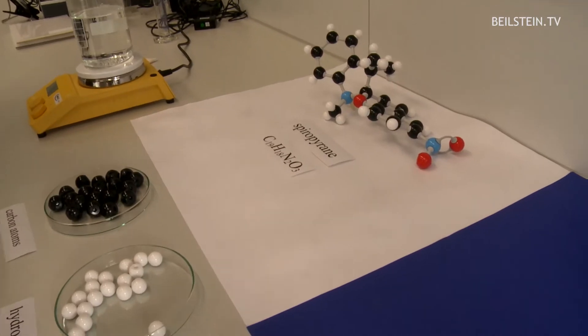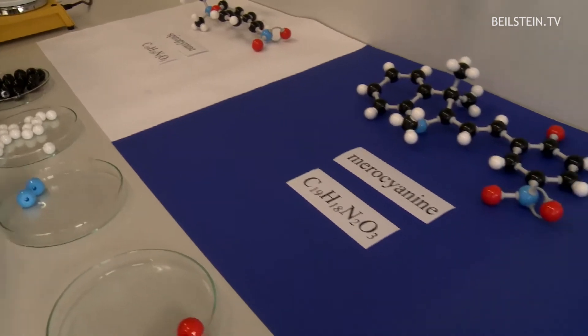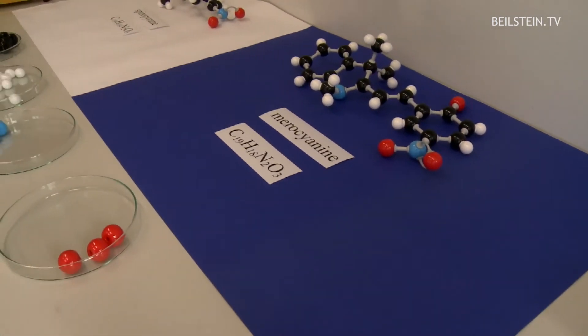Okay. But now I'm interested in the science behind all of this. How exactly does this work? Here's a spiropyran molecule. That is the merocyanin molecule. Those are the models of our two isomers.